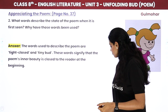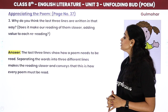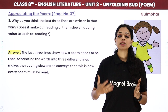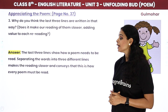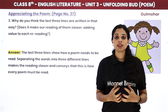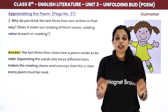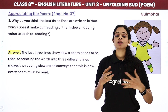Why do you think the last three lines are written in that way? The last three lines show how a poem needs to be read. Separating the words into three different lines makes the reading slower and conveys that this is how every poem must be read — word by word, line by line — trying to understand the meaning and the original self of the poem.